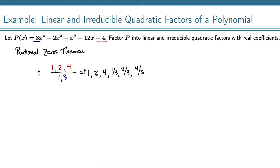Then we just need to start testing these to find a zero for this polynomial. We're going to use synthetic division. So we list our coefficients: 3, negative 2, negative 1, negative 12, negative 4.